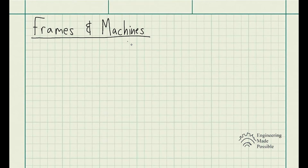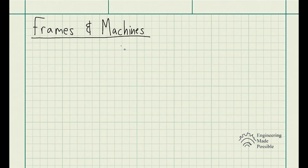Today we'll be going over frames and machines and some examples on how to solve problems with them. Frames and machines are two types of structures. Frames are used to support loads, whereas machines contain moving parts and are designed to transmit and alter the effects of forces.